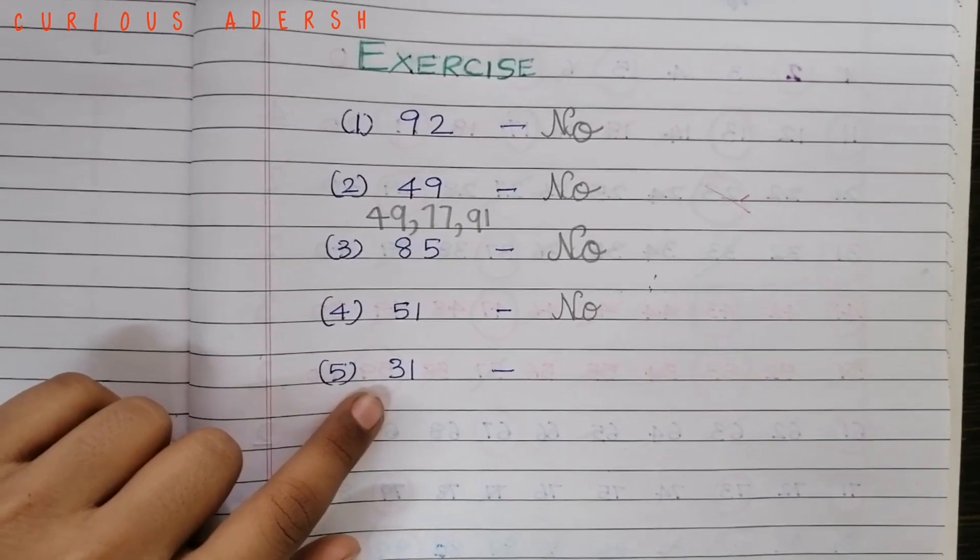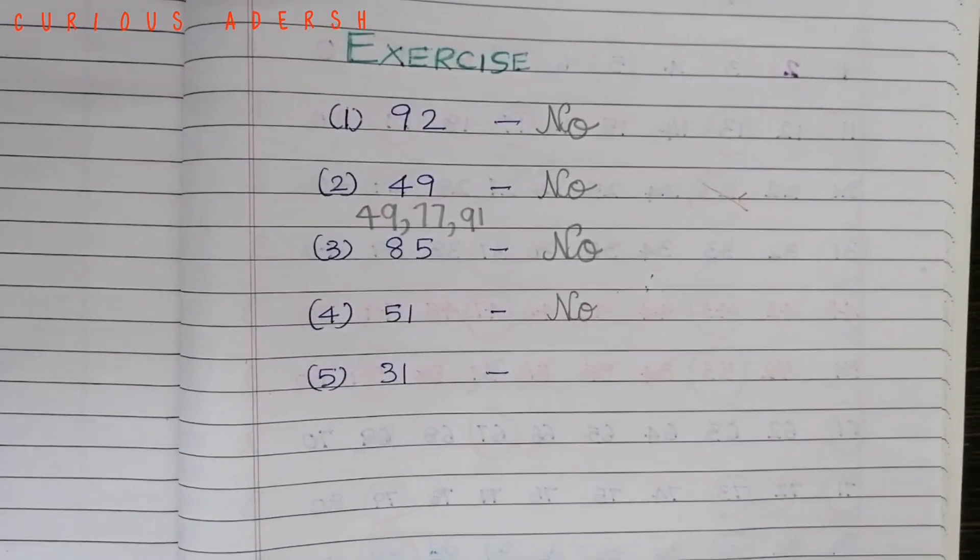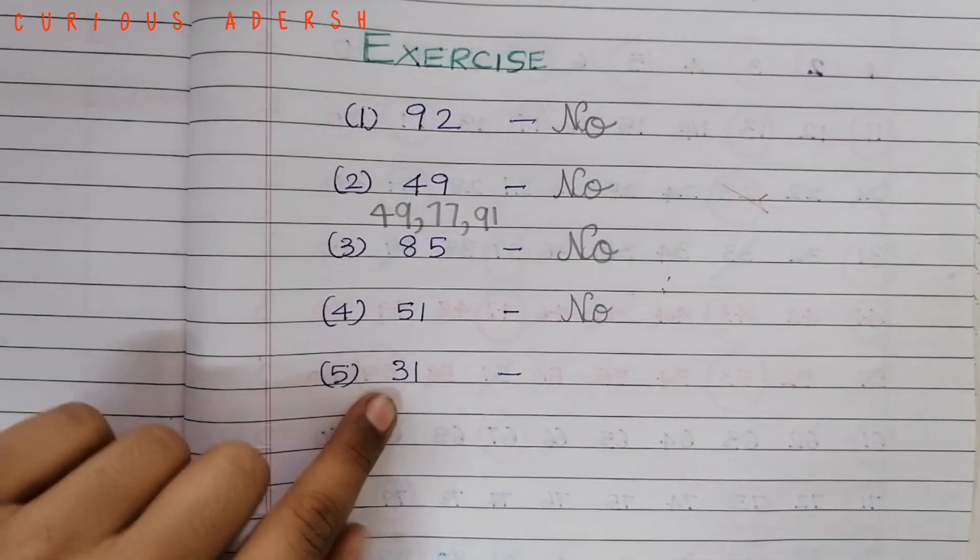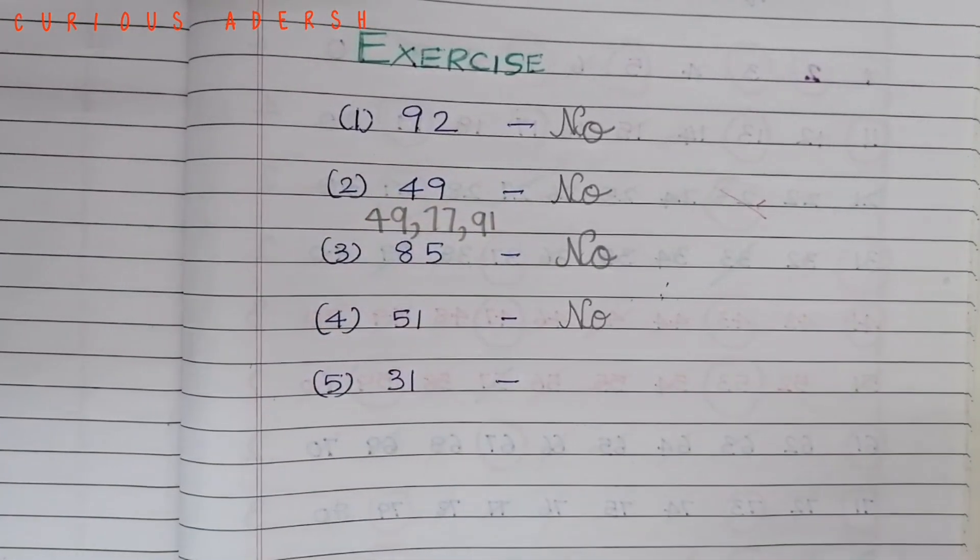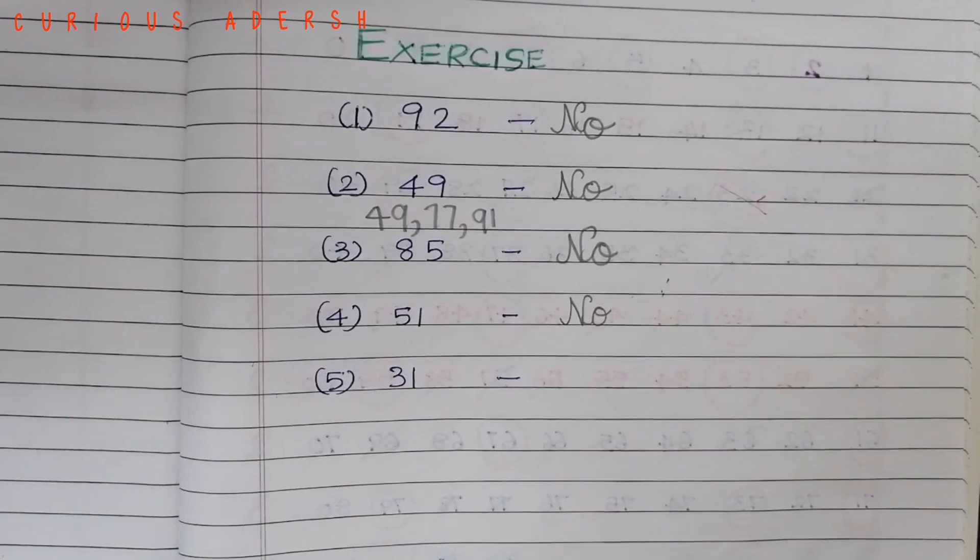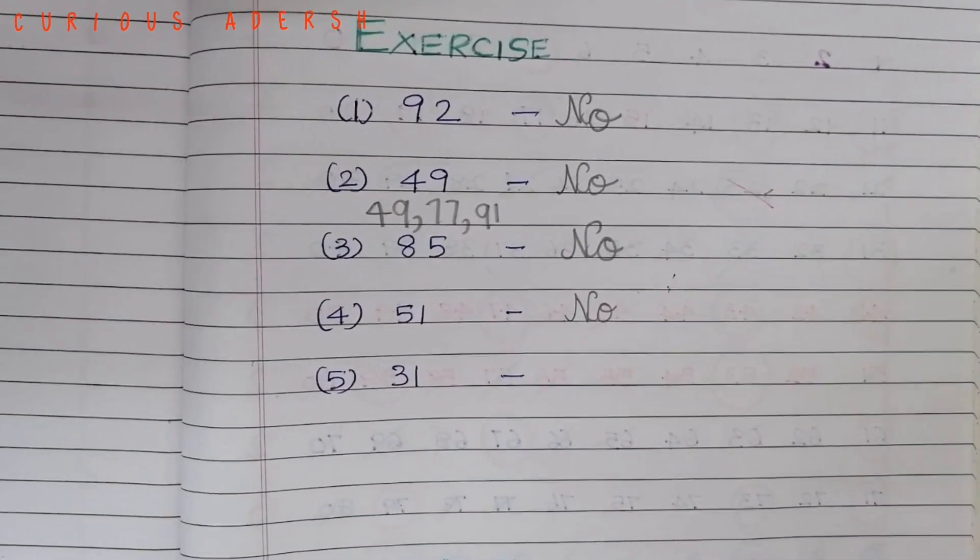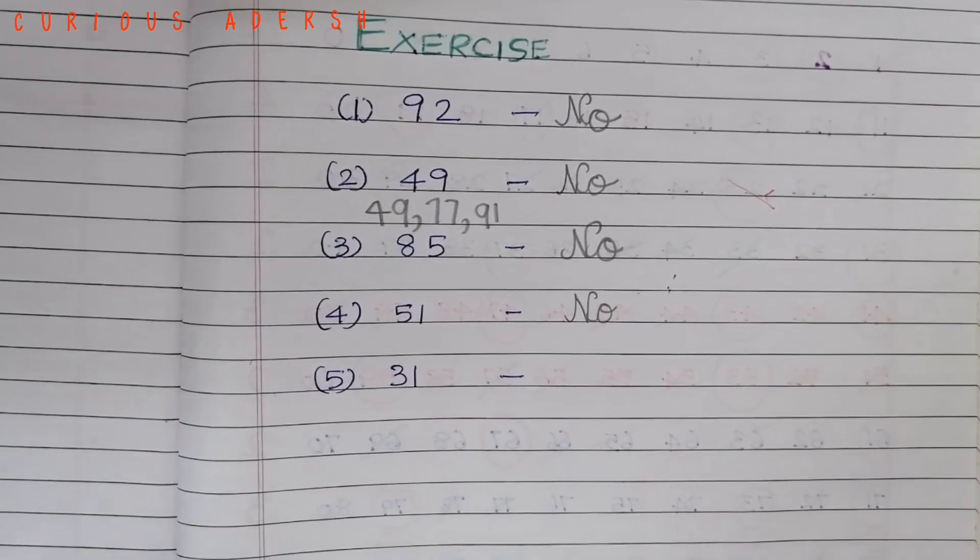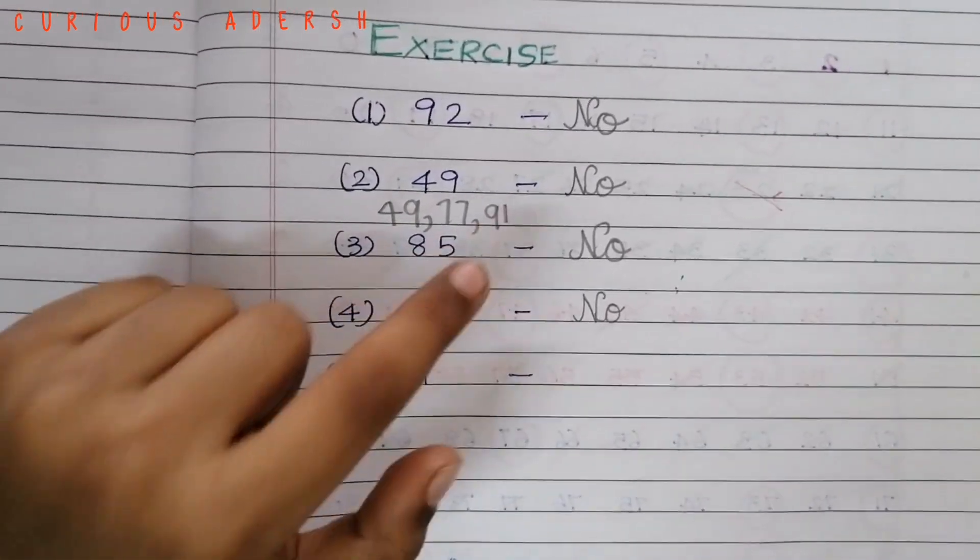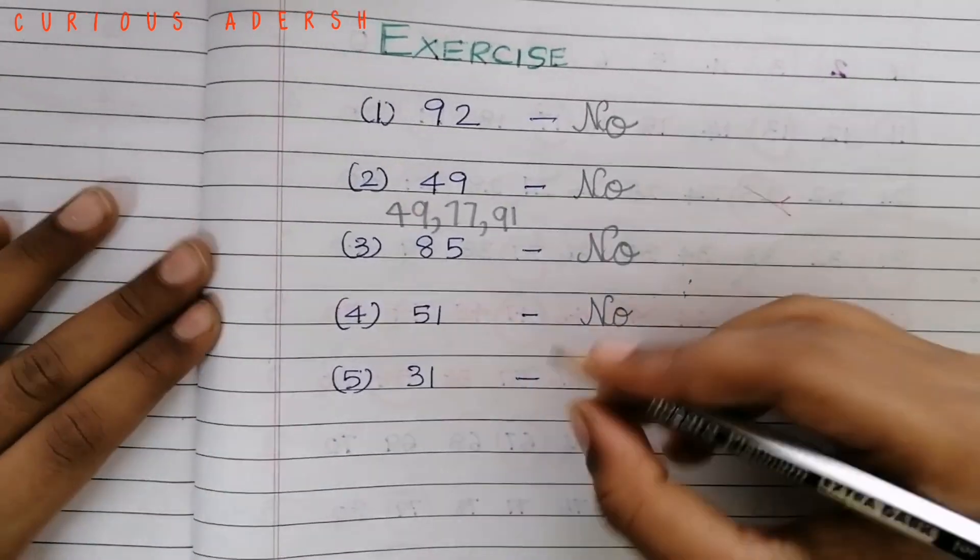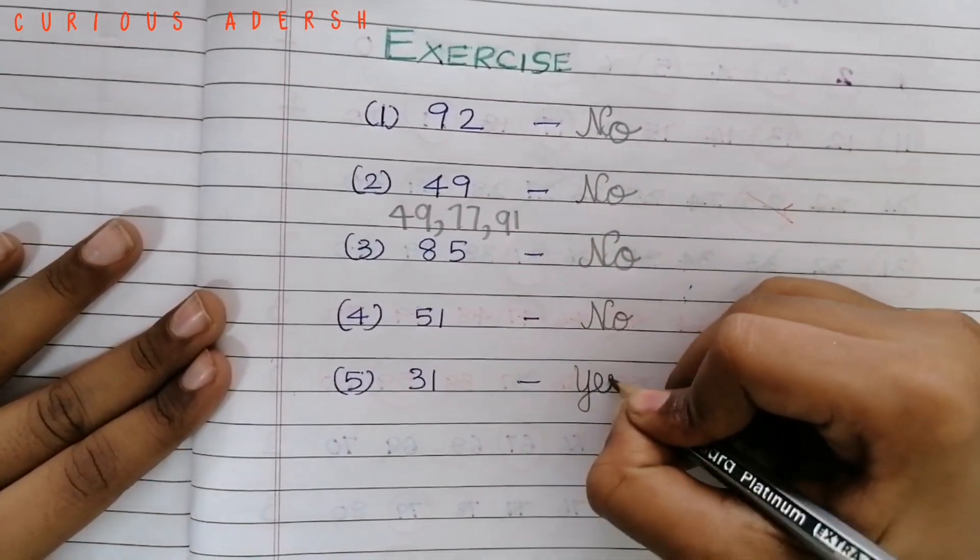Is 31 a prime number? It is not an even number. It doesn't end with 5. 3 plus 1 is 4. 4 is not a multiple of 3. And it doesn't come in any of those 3 numbers. What are those 3 numbers? 49, 77 and 91. So 31 is a prime number. Finally a prime number.